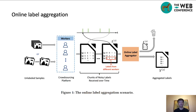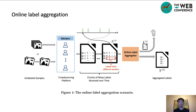This is the online label aggregation scenario of this paper. We can continuously provide subsets of data to the workers. The workers will gradually label the received data and output the noisy labels. When receiving a chunk, the online label aggregator will aggregate the chunk and output the corresponding aggregated labels. After aggregating, the processed chunk will be discarded immediately.